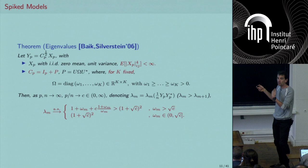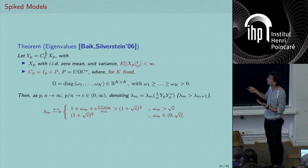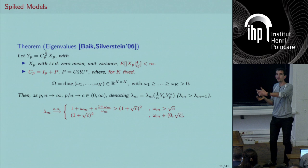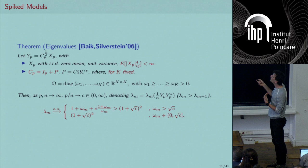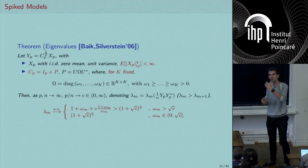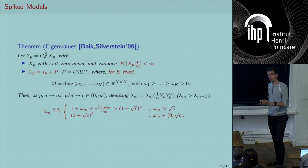If ω_m is larger than √c, then the m-th largest eigenvalue of Ĉ_p goes to a limit strictly greater than (1 + √c)², which we can exactly characterize. So there's a signal-to-noise ratio effect: if you have enough power — more than √(p/n) — you can see something; otherwise not.